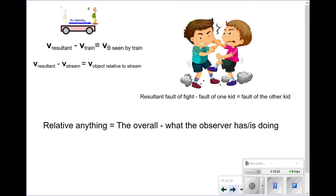Consider two kids in a fight: each blames the other because when looking at the situation, they ignore everything they themselves have done. This is why in conflicts we look for an uninvolved, arbitrary third party with no vested interest — their view is more objective. They're like the stationary observer who didn't contribute to the situation, so they don't subtract anything they've done.